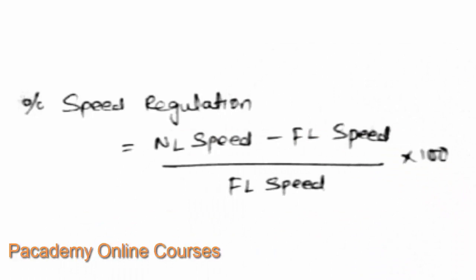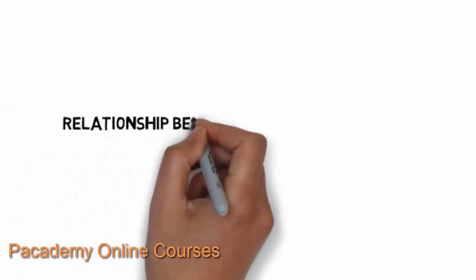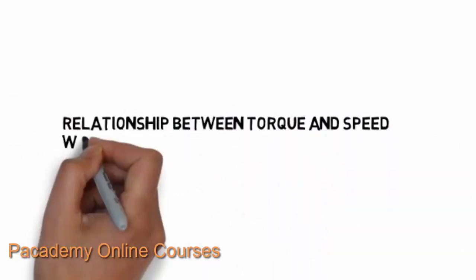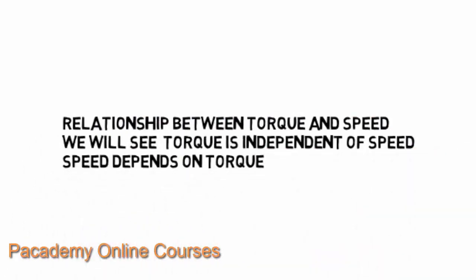Speed regulation of an electric motor is defined as the ratio of (no-load speed minus full-load speed) divided by the full-load speed, multiplied by 100. It describes how much the speed reduces from no load to full load — in other words, if the load is suddenly removed from the motor, how much the speed will vary.